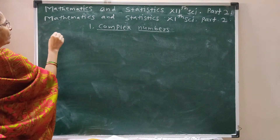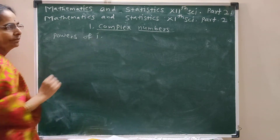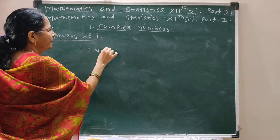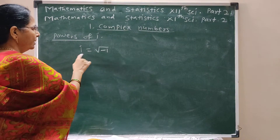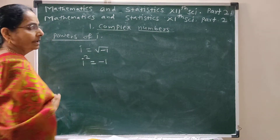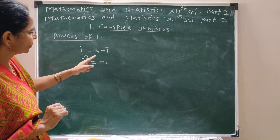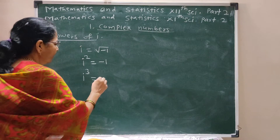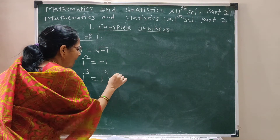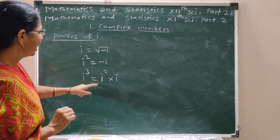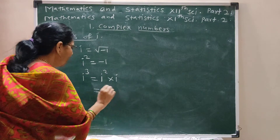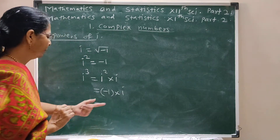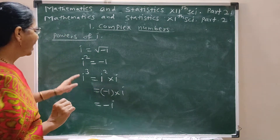Next point: Powers of i. We know that i equals root of minus 1, and i squared equals minus 1. i cubed equals i squared times i, and since i squared is minus 1, i cubed equals minus 1 times i, which is minus i.